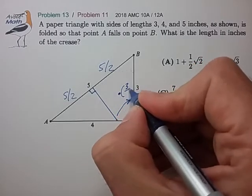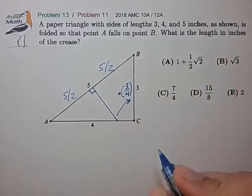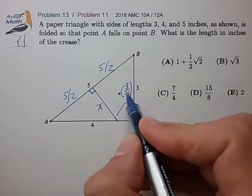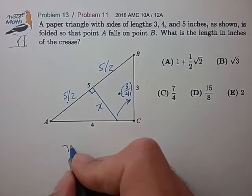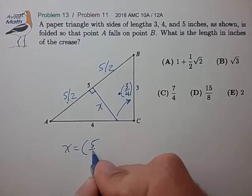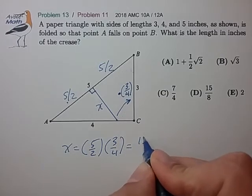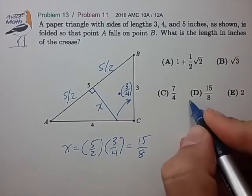So the crease length X is simply 5 halves times 3 quarters or 15 eighths for choice D.